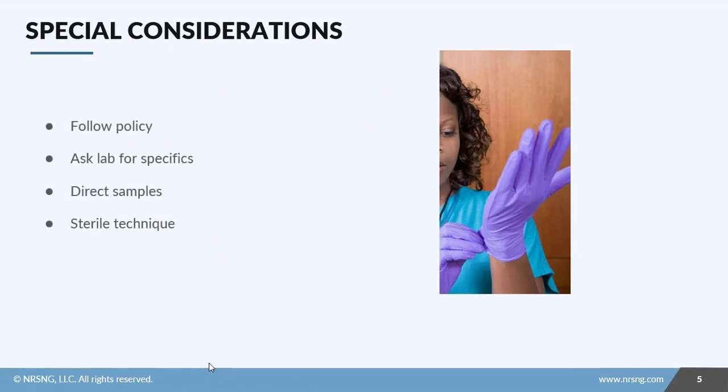So what do you need to be aware of as the nurse? Well the first thing you need to do is follow policy. Find out what your unit policy is regarding different types of samples and make sure you follow those. If you have a question about the type of culture you're supposed to get, then call the lab and find out the specifics. In most cases you're going to be responsible for getting that direct sample, and you need to make sure that you follow sterile technique when you have to or when there's a question. The last thing you want to do is have some sort of contamination on you or that falls into the sample and it grows and gives a false positive, which results in delay of care for your patient.